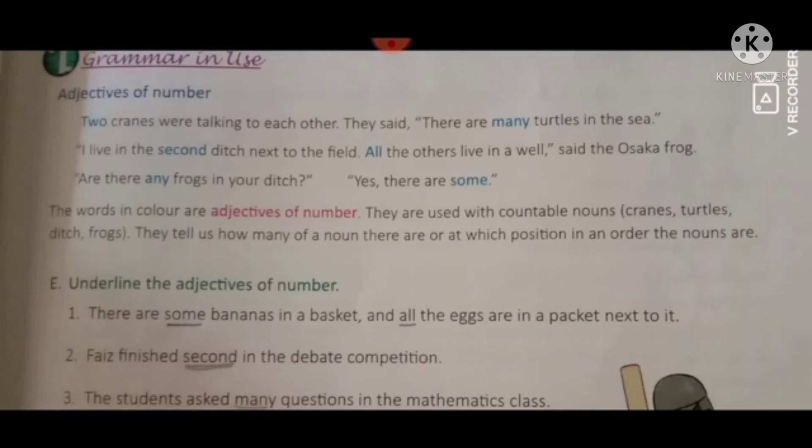All the others live in a well, said the Osaka frog - 'all' is also an adjective of number, but we can't count it. 'Are there any frogs in your ditch? Yes, there are some.' Any and some are uncountable nouns. So the words in color are adjectives of number - some are countable and some are uncountable, just like cranes, turtles, ditch, and frogs are countable.